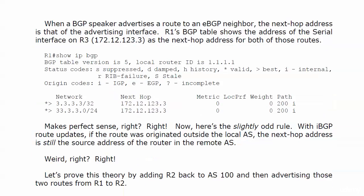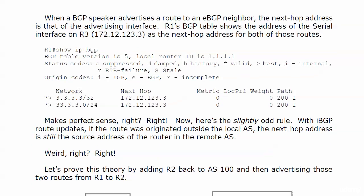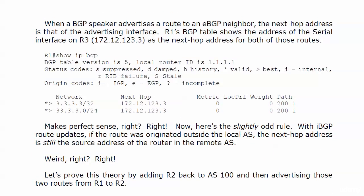There are the two routes and the next hop is 123.3 — everything is exactly as we would expect. When a BGP speaker advertises a route to an EBGP neighbor — just what we saw between Router 3 and Router 1 — the next-hop address is going to be that of the advertising interface, which is intuitive and we saw that in the table.